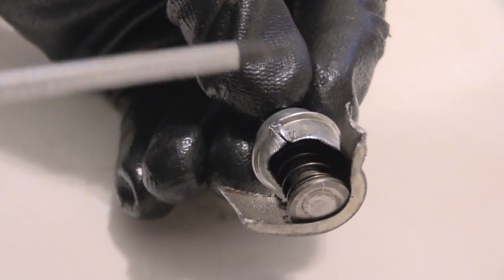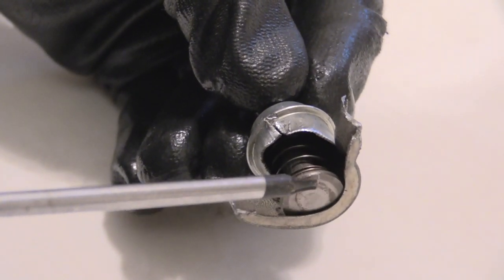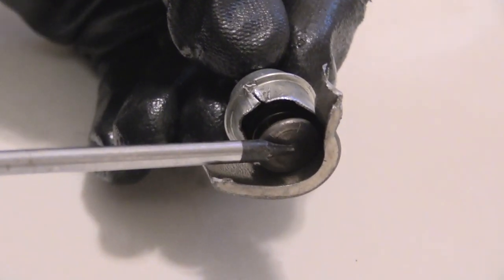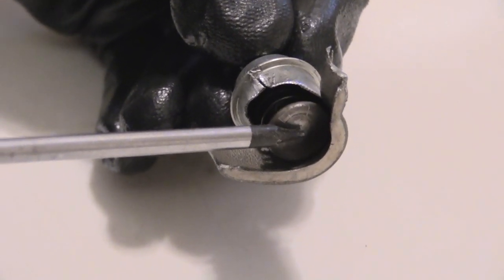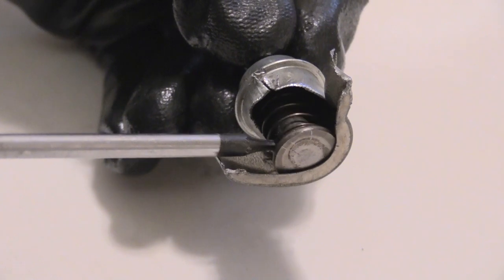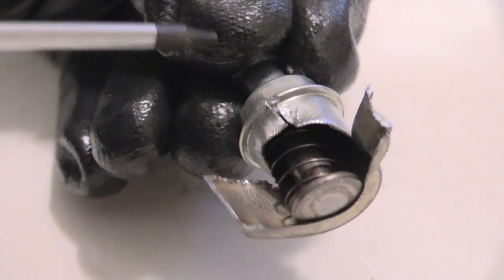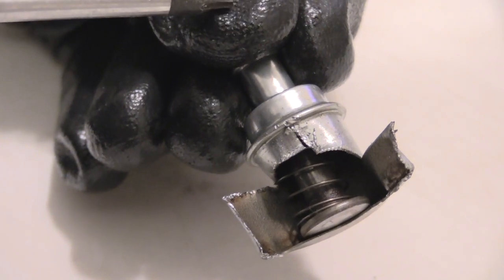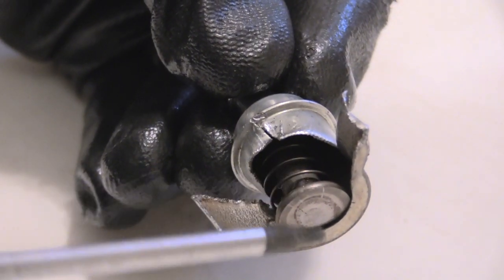The two things that happen a lot of time is it can be stuck open like this, where it's not closing correctly, which is a problem. Or it can be stuck closed like this, where it's not opening anymore. So even though you have your vacuum on top of your PCV valve, it's not opening correctly, so it's not sucking the gases up the way it's supposed to, which can lead to multiple problems with the way your vehicle runs.